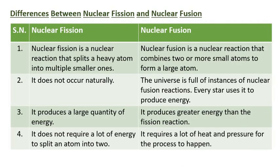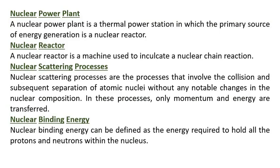Differences between nuclear fission and nuclear fusion: Nuclear fission is a nuclear reaction that splits a heavy atom into multiple smaller ones, while nuclear fusion combines two or more small atoms to form a large atom. Nuclear fission does not occur naturally, whereas the universe is full of nuclear fusion reactions — every star uses it to produce energy. Nuclear fission produces a large quantity of energy, but nuclear fusion produces greater energy than fission. Nuclear fission does not require a lot of energy to split an atom, while nuclear fusion requires a lot of heat and pressure.